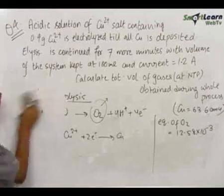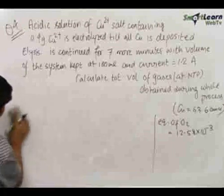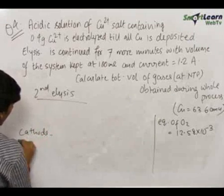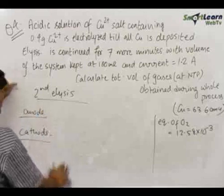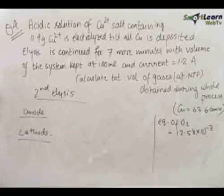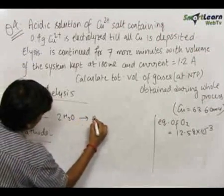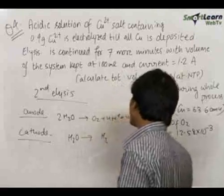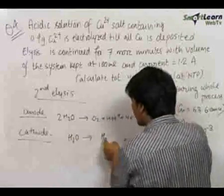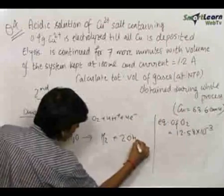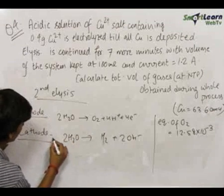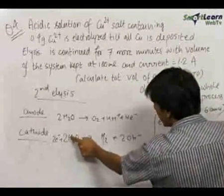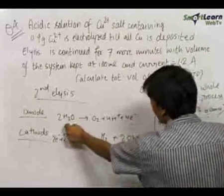Now let us look at the second part of the electrolysis. After all the copper has been deposited, at both electrodes, oxidation of water and reduction of water will take place because there is no other reagent. At the anode: 2H₂O → O₂ + 4H⁺ + 4e⁻. At the cathode, reduction of water takes place — hydrogen gas is produced where the oxidation number of hydrogen reduces from +1 to 0. Balancing: 2H₂O + 2e⁻ → H₂ + 2OH⁻.